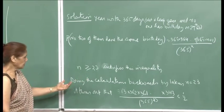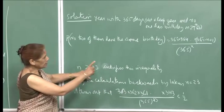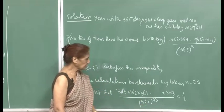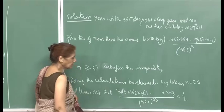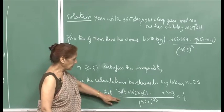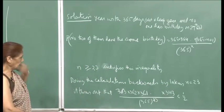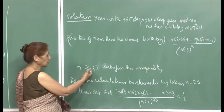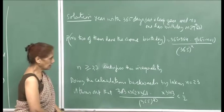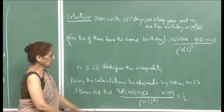For n = 23, computing backwards: the product from 343/365 up to 364/365 multiplied together just falls below half. For n = 22 it does not. So if you have 23 or more people in a group, the probability that no two share a birthday drops below half — an interesting result. Calculating this directly is cumbersome, motivating a Poisson approximation approach.